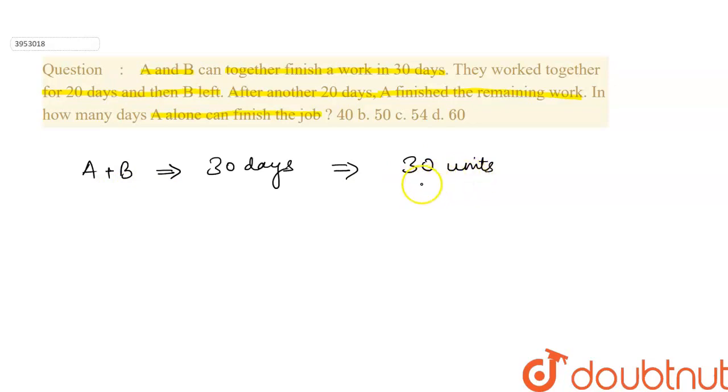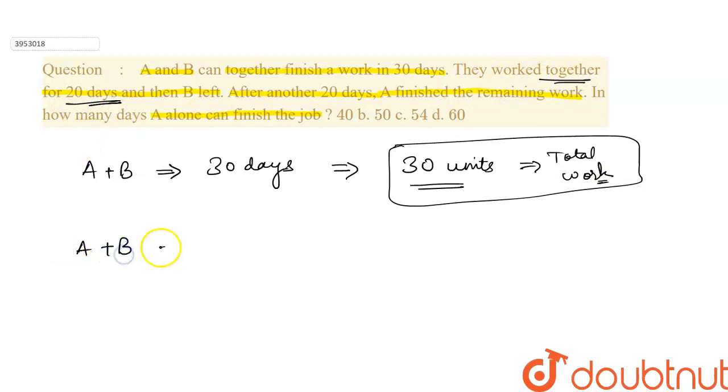This is our total work. Now, we can write the condition that they work together for 20 days. A and B work for 20 days, then B left.